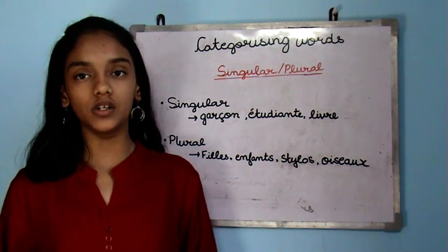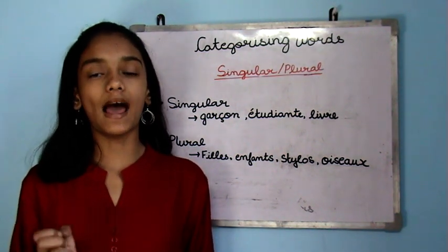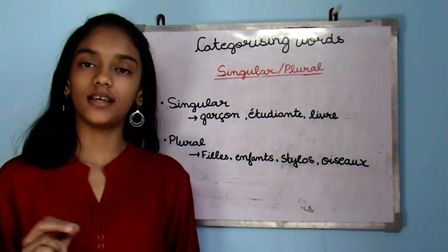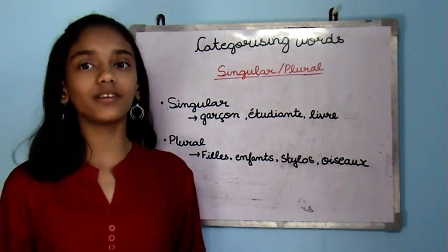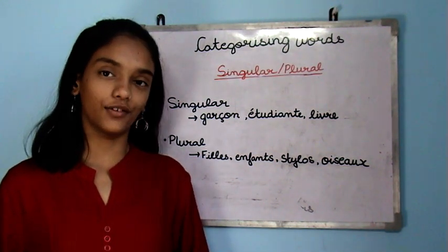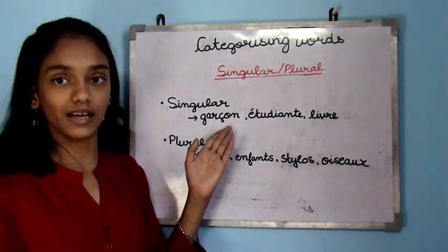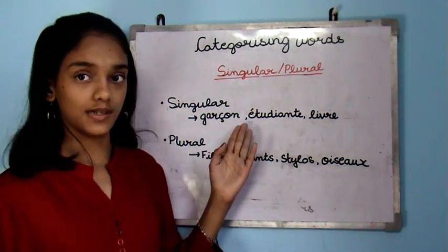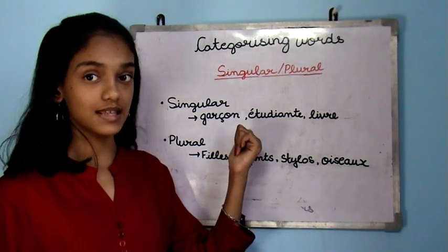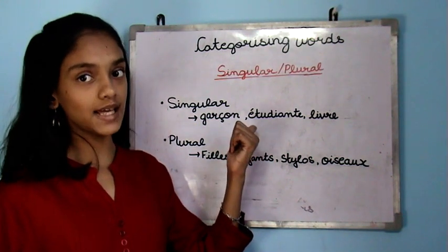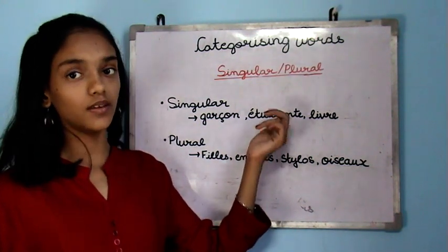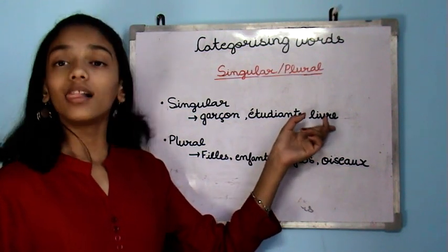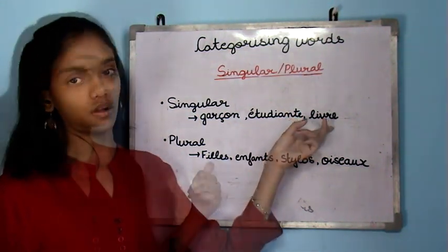If a word ends with 's' or 'x', it's a plural word, and if not, it's a singular word. For example, garçon, which means a boy, doesn't have an 's' or 'x'. Étudiant means female student. Livre means book.